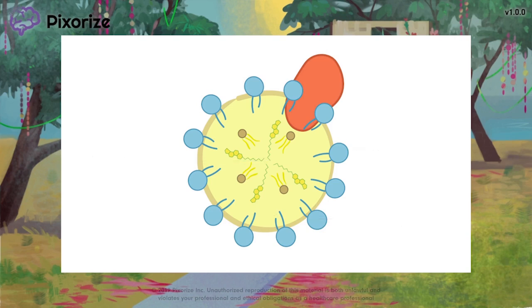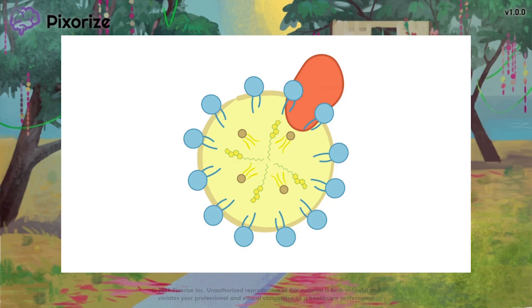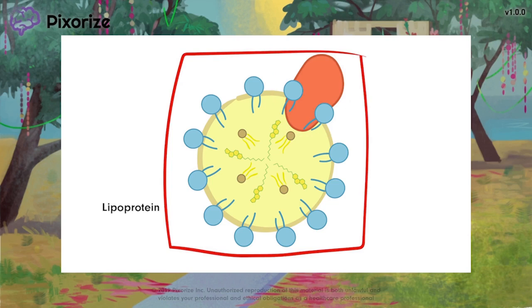If you break down the word lipoprotein, lipo refers to lipid, and protein refers to protein. So lipoproteins are just particles composed of both lipids and proteins. Now the proteins they are composed of are called apolipoproteins. The word lipoprotein refers to the entire lipoprotein particle, while apolipoprotein refers to distinct proteins within the lipoprotein. The prefix apo actually means away from or separate.